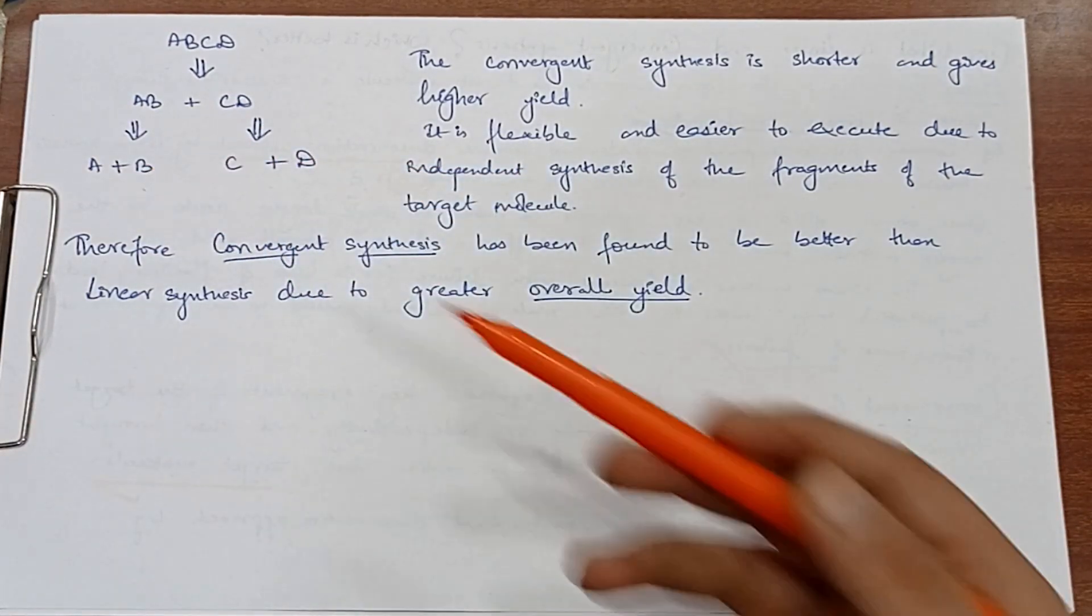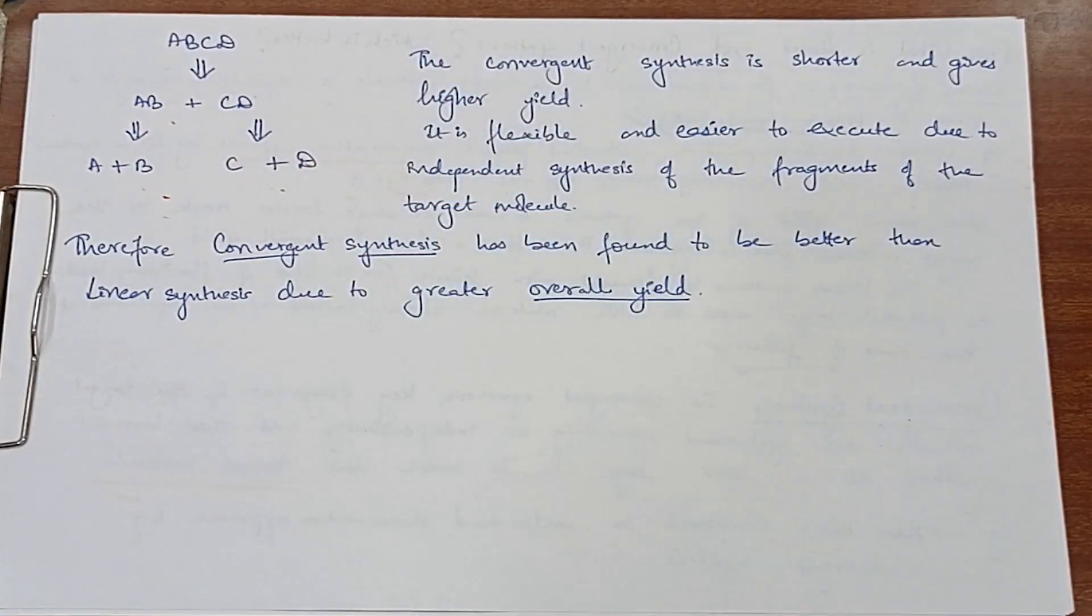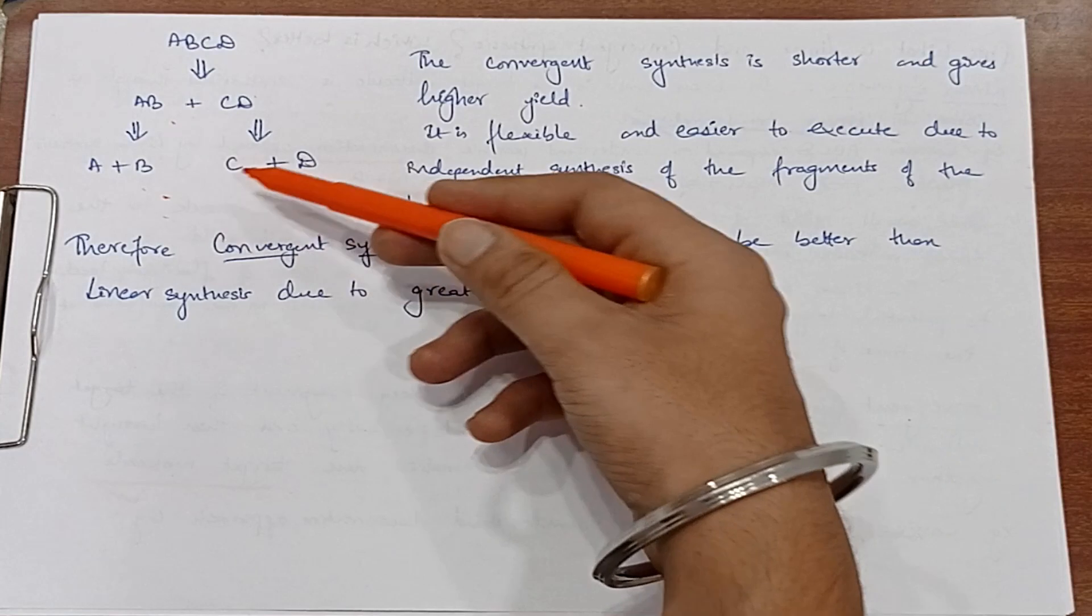Ki hamara paas AB ko pehle bana sakte hain separately, independently. Phir CD ko bana sakte hain. Vo bhi separately, independently. Toh main hamara paas kya hota hai. Ki yeh dekho. Yaha par humein itna zyada time nahi laga.